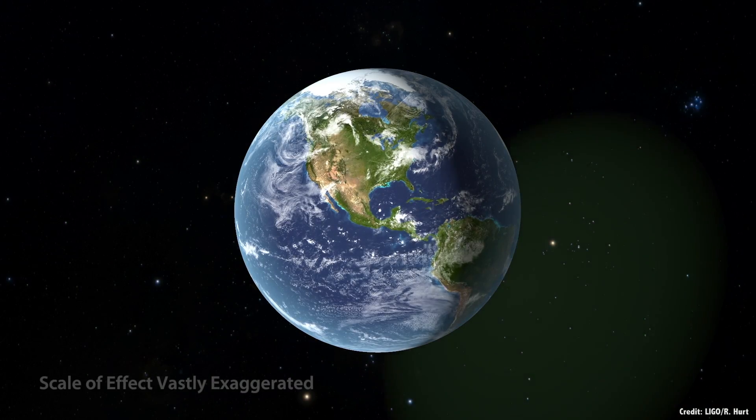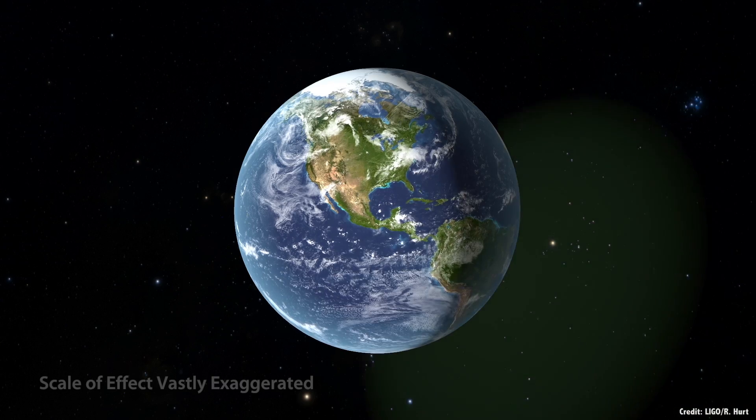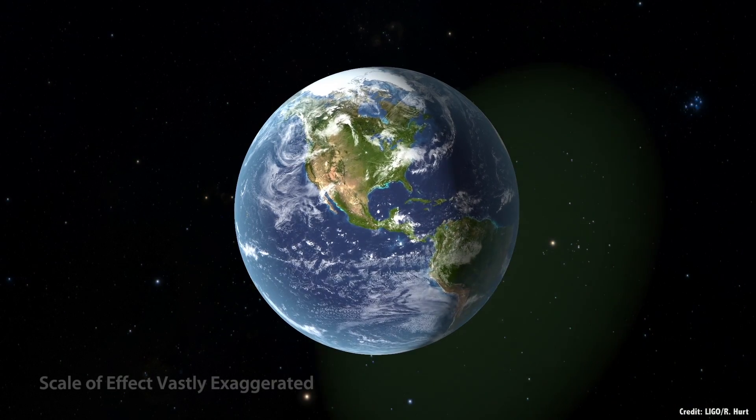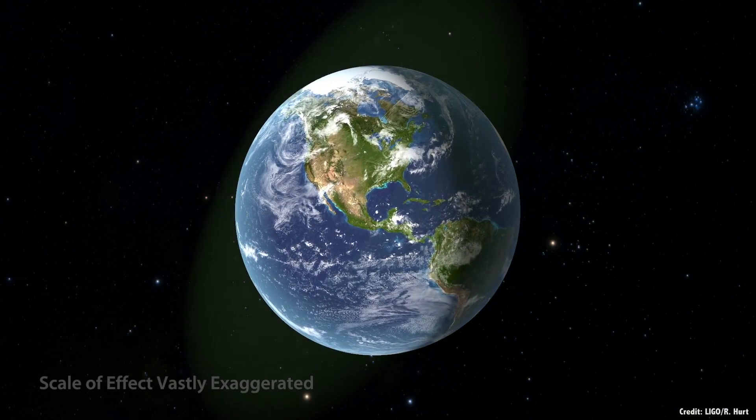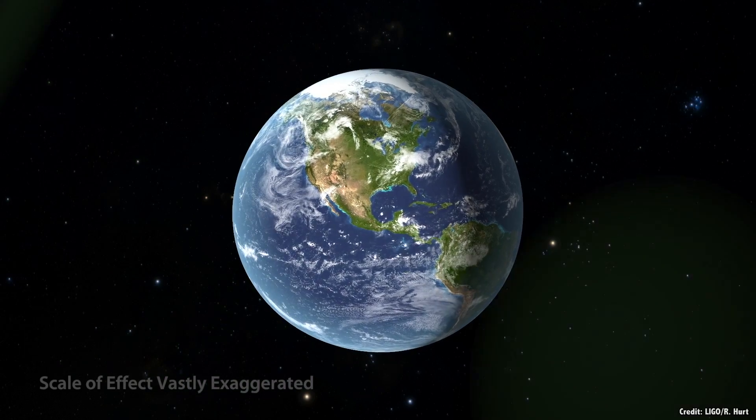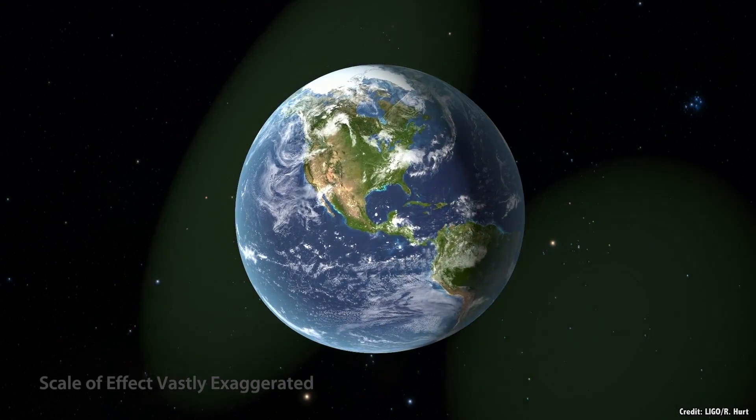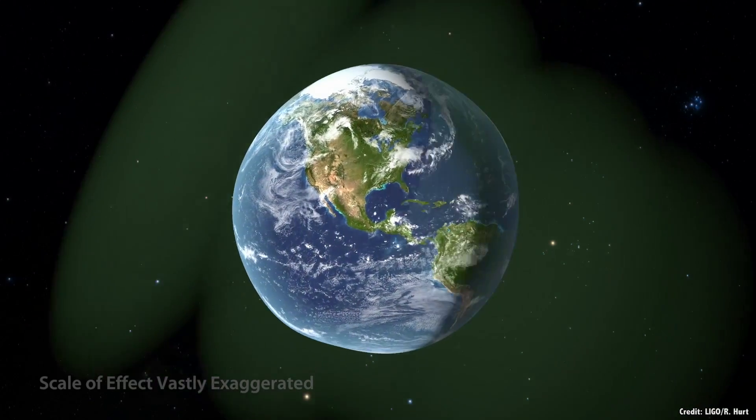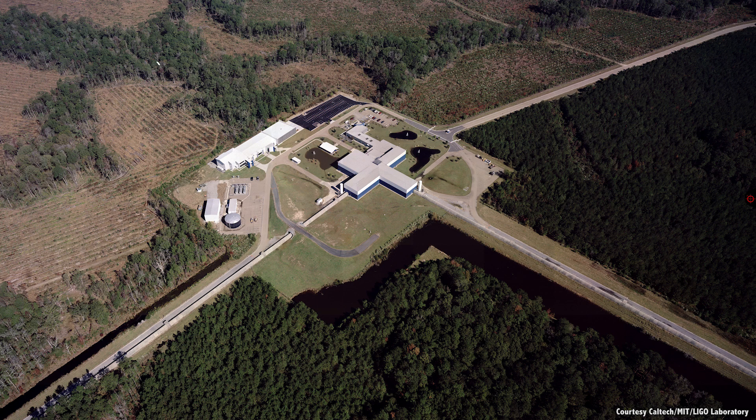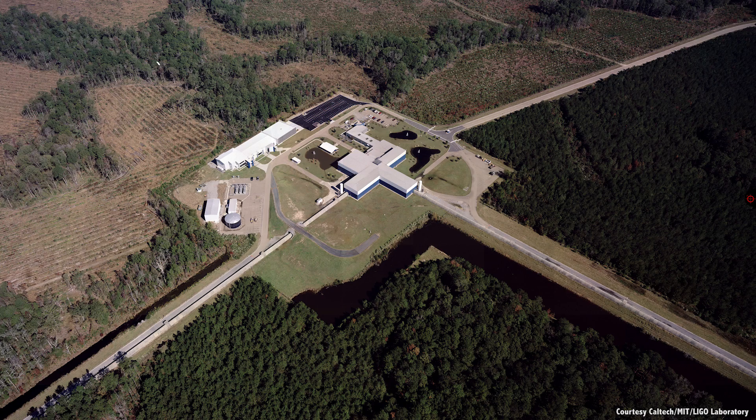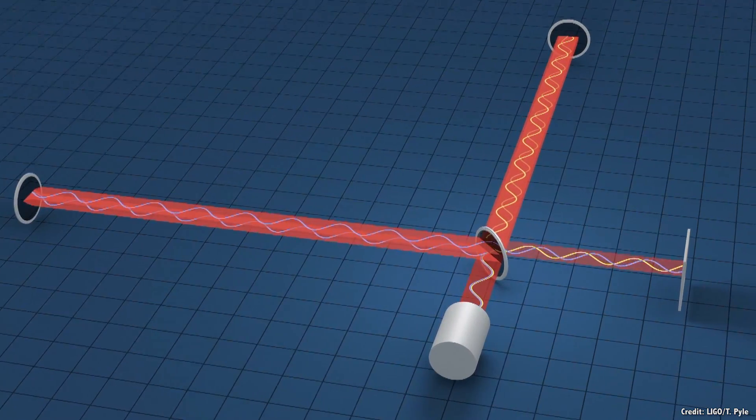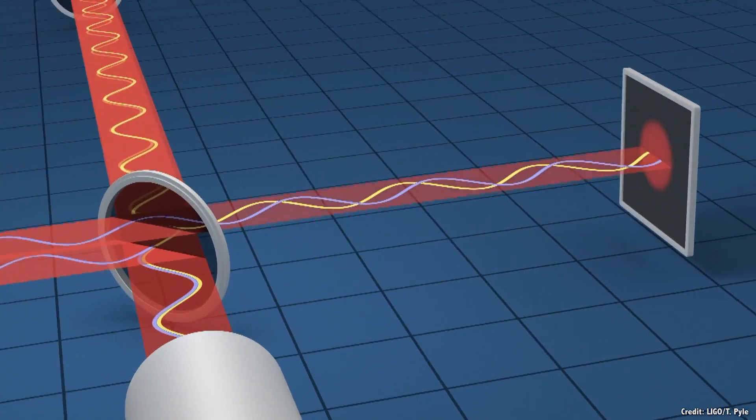These gravitational waves traveled outward from the colossal collision at the speed of light, stretching and compressing space-time like a tsunami wave crossing the ocean, until they reached Earth, located about 2.9 billion light-years away. The waves swept past each of the two LIGO facilities located in different parts of the United States, stretching the length of carefully calibrated laser measurements.